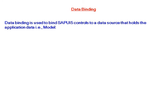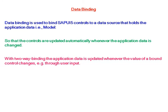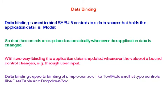Data binding is used to bind SAPUI5 controls to a data source that holds the application data — that is the model — so that the controls are updated automatically whenever the application data is changed. With two-way binding, the application data is updated whenever the value of a bound control changes, for example through user input. Data binding supports binding of simple controls like text field and list type controls like data table and drop-down box.